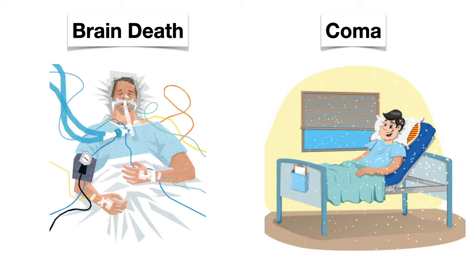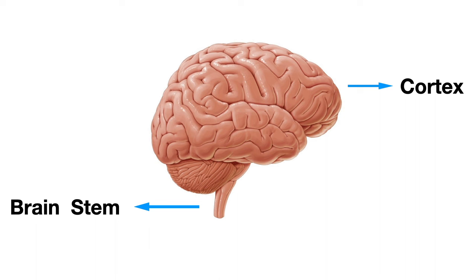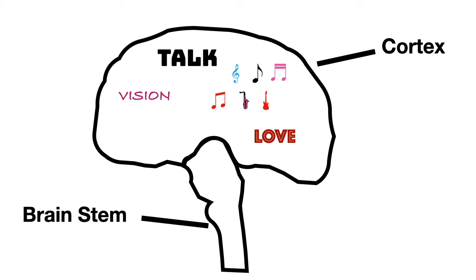The brain is broadly divided into two parts: the cortex and the brainstem. The cortex controls higher functions, whereas the brainstem controls breathing, heart rate, and consciousness.